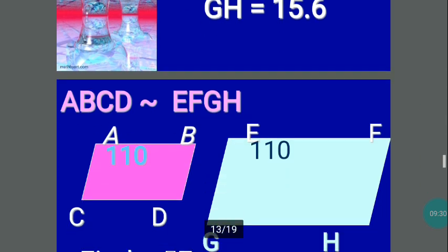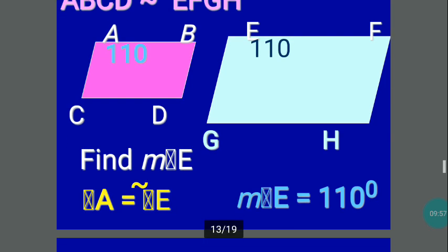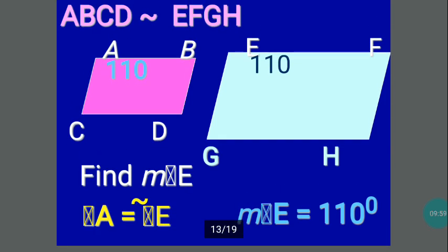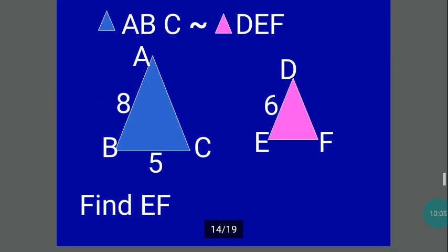Now considering the same figures: quadrilateral ABCD is similar to parallelogram EFGH. If angle A is 110 degrees, then angle E will also be 110 degrees because angle A is congruent to angle E. Let us now proceed to a set of triangles.